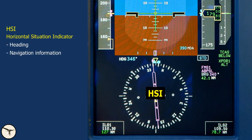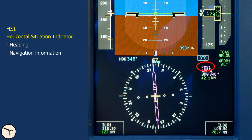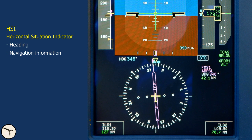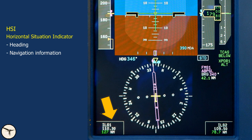Below the ADI is the horizontal situation indicator, the HSI, which shows heading and navigation information. Selected heading is 346 degrees, shown with a cyan number and bug. Since this is the captain's instrument, we see navigation information from FMS number 1. The magenta CDI shows that we are on correct track. The next waypoint on the route is ABPSL. The bearing is 340 degrees and the distance is 42.1 nautical miles. At the bottom we have two boxes with NAVAID information: one tuned to an ILS with frequency 110.3 MHz at 127 nautical miles, and another ILS at 78.7 nautical miles.